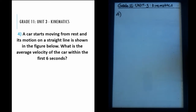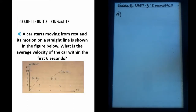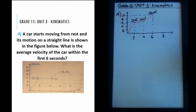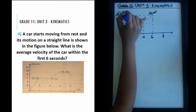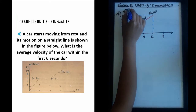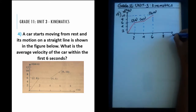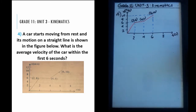A car starts moving from rest and its motion on a straight line is shown in the figure below. What is the average velocity of the car within the first six seconds? So we're given this figure here. I just redrew the graph — this is a velocity in meters per second versus time graph, showing the speed a car travels.